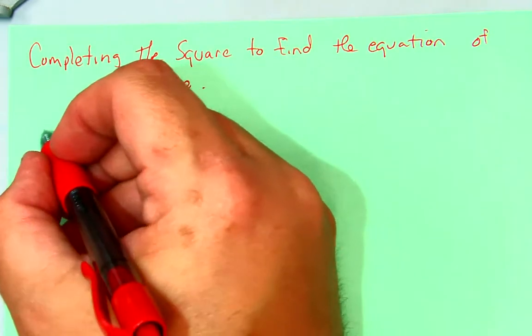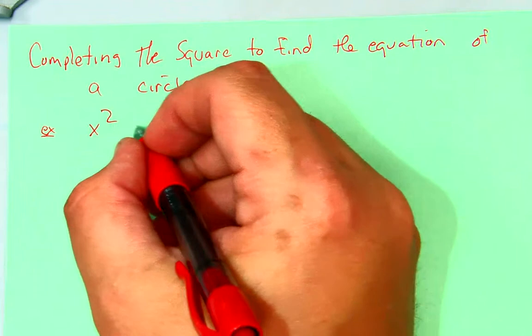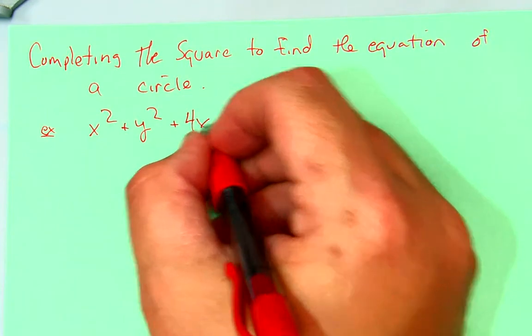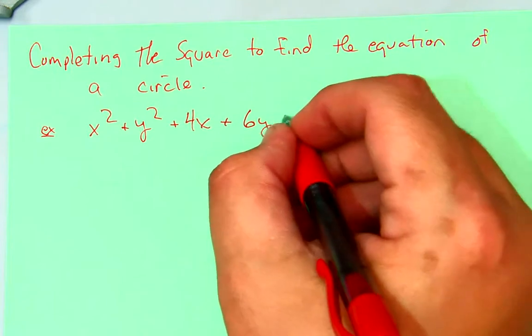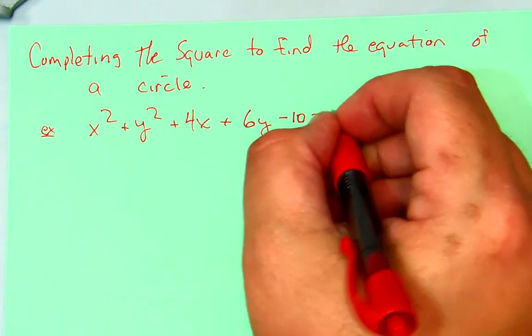Now, we're going to use an example. We're going to say x squared plus y squared plus 4x plus 6y minus 10 is equal to 0.